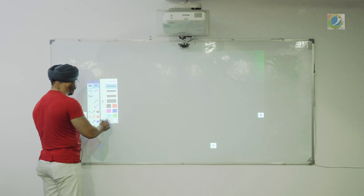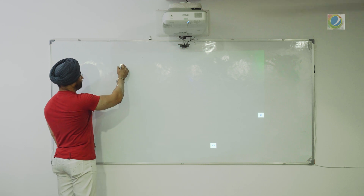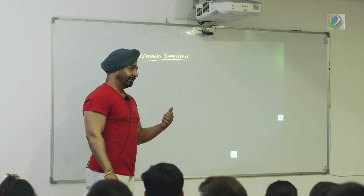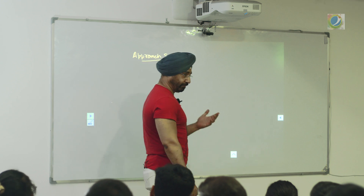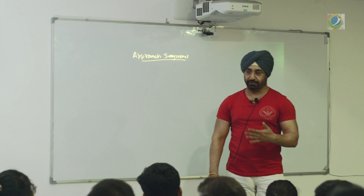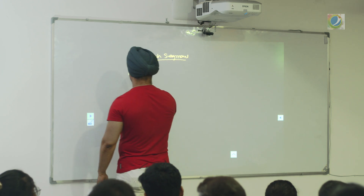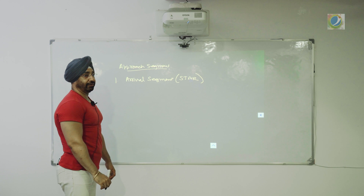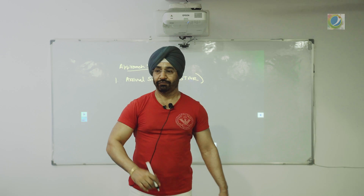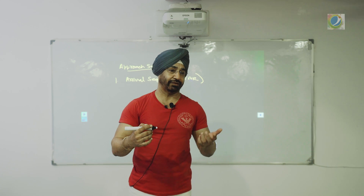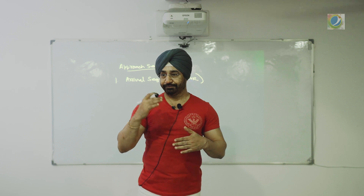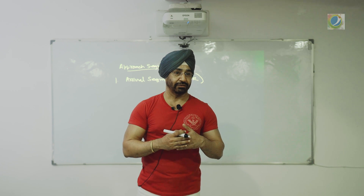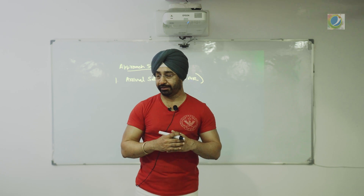In this class we will see approach segments. This is for instrument approach — it could be precision or non-precision. Initially there were three, then four, now we follow five. The first is your arrival segment, which was not there originally. What we normally refer to as a STAR — Standard Arrival Routes — we will see those. Standard arrival routes are there for any major airport from any direction. When you are cleared for any approach, they clear you for that arrival.